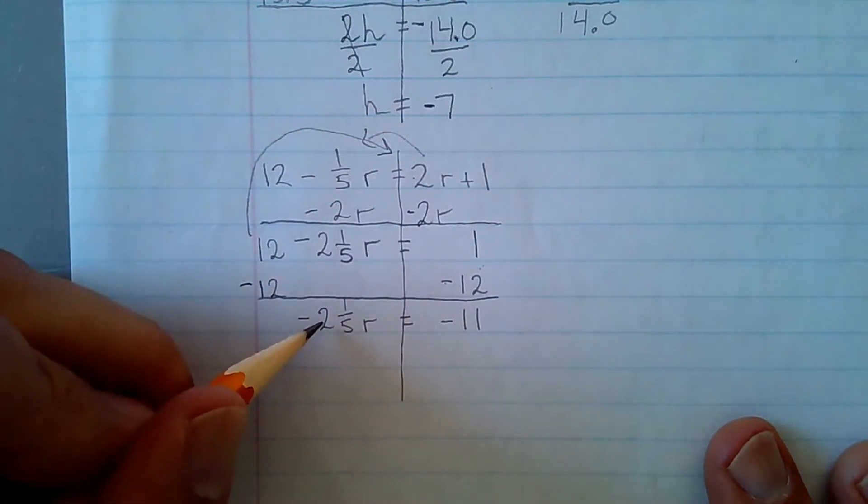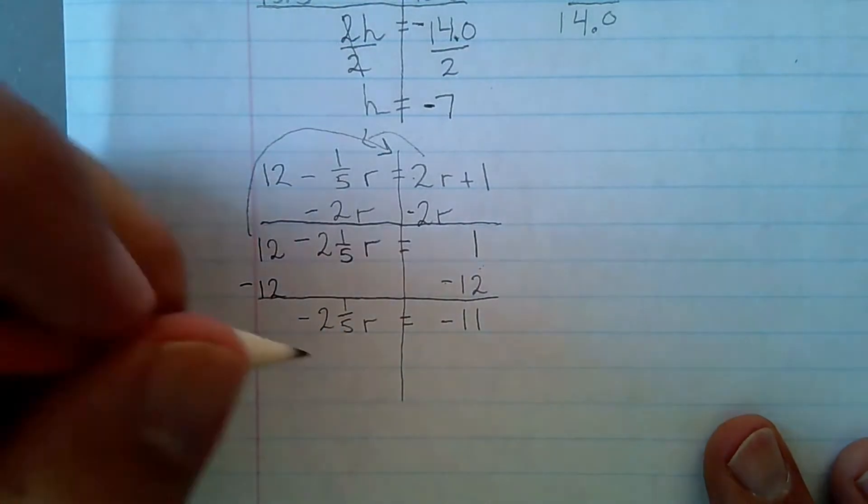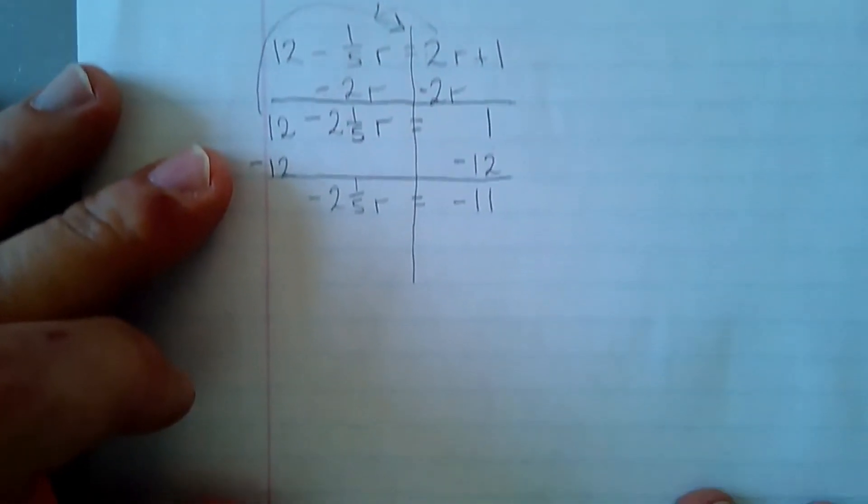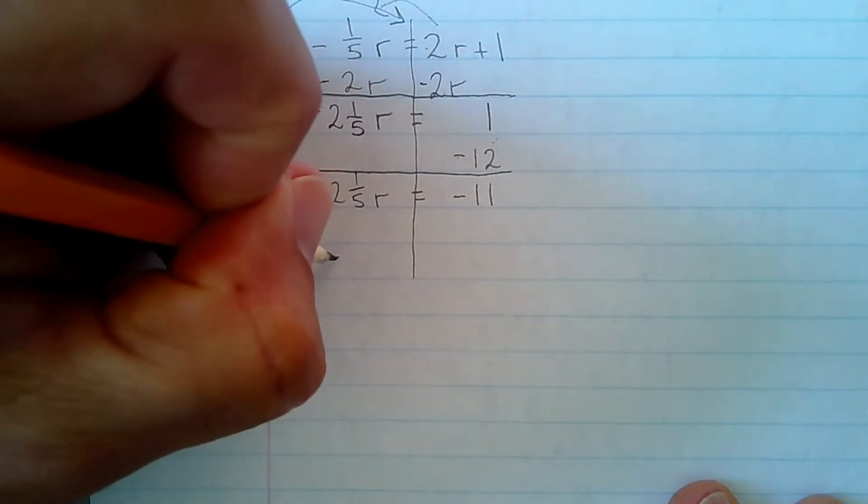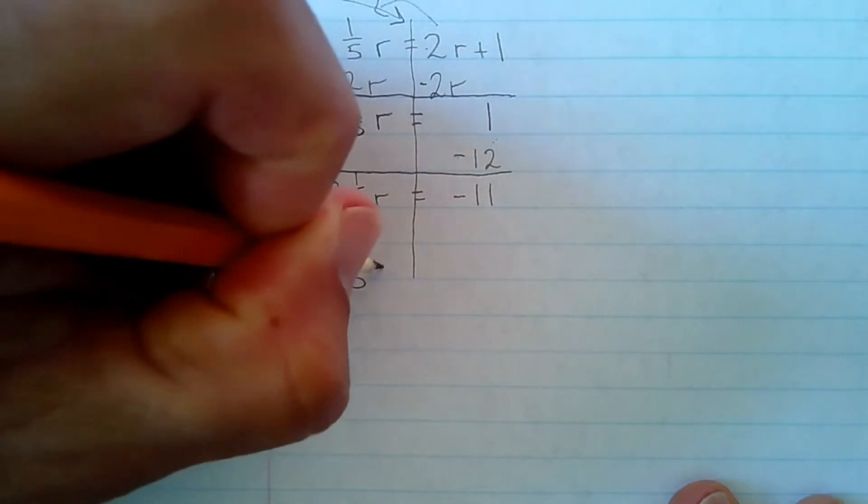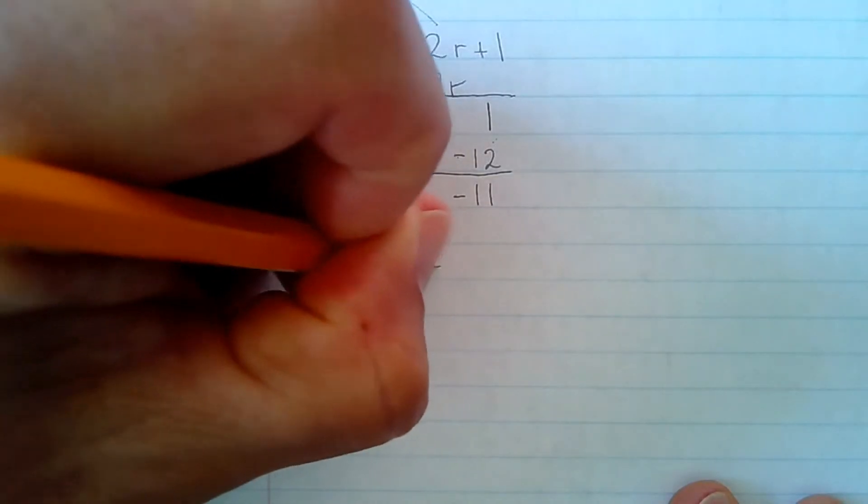I'm going to make this an improper fraction. It's going to make things easier. I have, let's see. This is negative 11 fifths. So negative 11 over 5 times r equals negative 11.